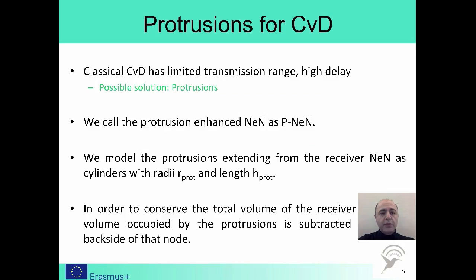Our concern is how protrusions can be utilized to improve the performance of CVD. Remember that classical CVD has limited transmission range and suffers high delay due to the slow diffusion of the messenger molecules. However, protrusions can be utilized to improve the reception process. We call such nanonetworking-enabled nodes that are enhanced by protrusions as PNANs.